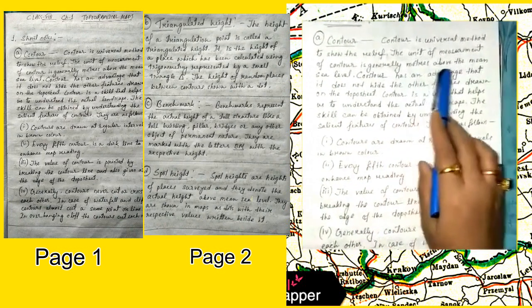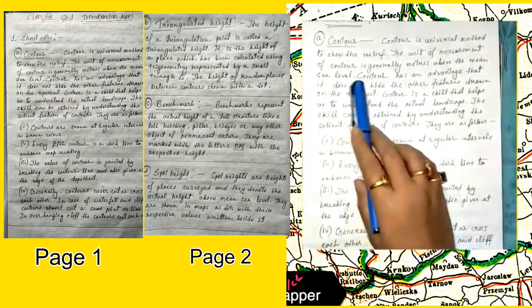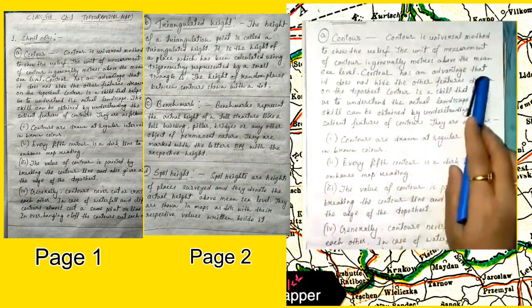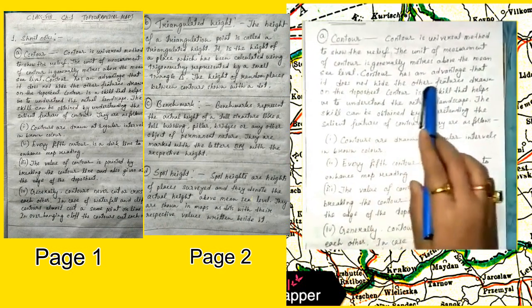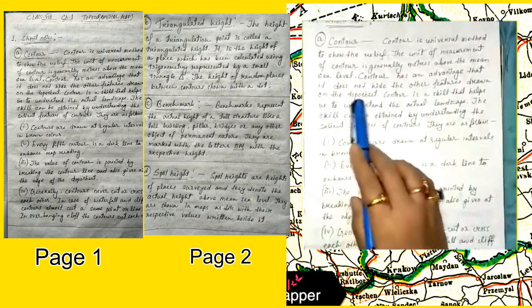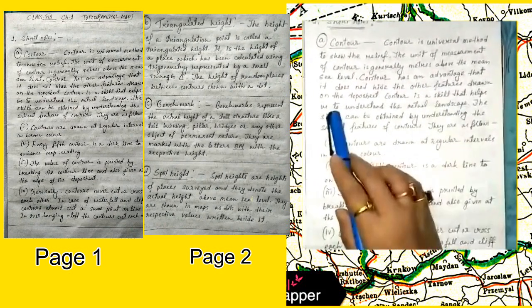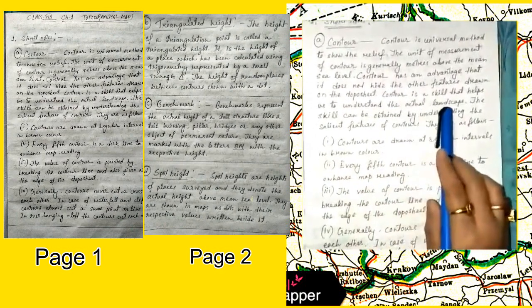Contour has an advantage that it does not hide the other features drawn on the topographic sheet. Contour is a skill that helps us understand the actual landscape. The skill can be obtained by understanding the salient features of contours.